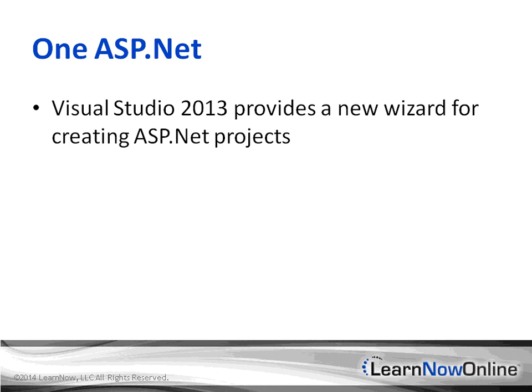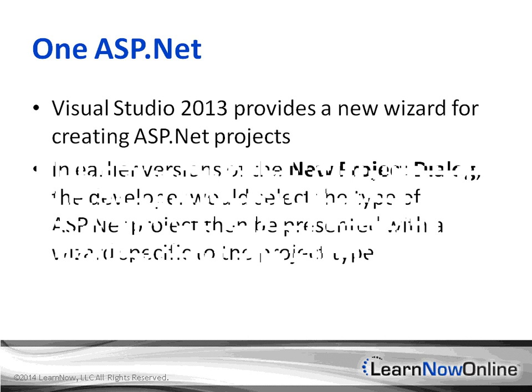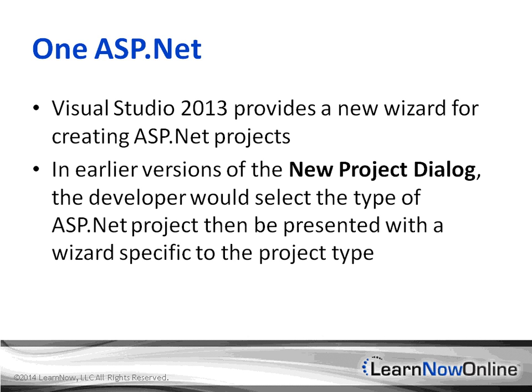Visual Studio 2013 provides a new wizard for creating ASP.NET projects. One of the great new features of Visual Studio 2013 and ASP.NET MVC5 is this new wizard, called One ASP.NET. The idea behind it is that instead of having a bunch of different project types to choose from when creating a new project, there's now one new project type, and then with it you can select the various components that you want to include.